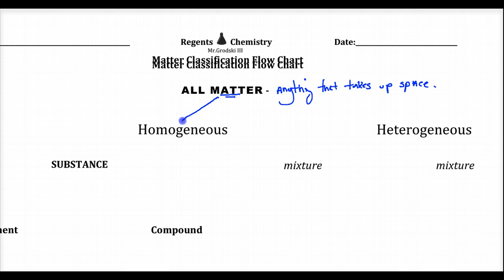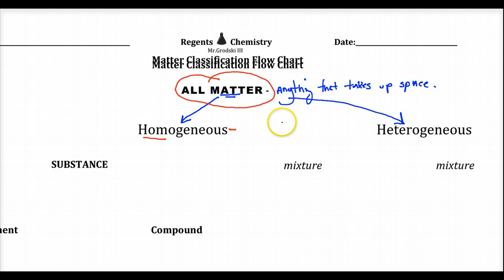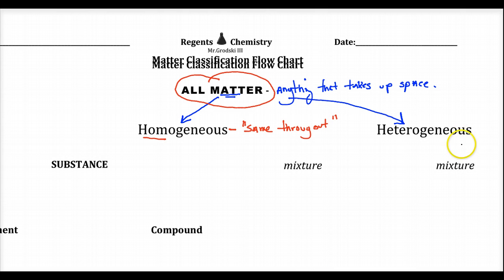We break down matter into either homogeneous or heterogeneous — that's the first breakdown. Homogeneous, as you might guess — homo means same — means the pieces of matter are all the same throughout. Heterogeneous matter is different throughout.